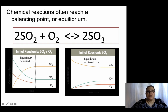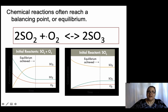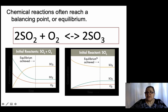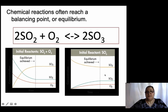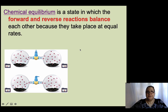Remember when we talked about the rate of reaction — reactants disappear while products appear. In this case it can go either way: you could start with the reactants, so SO₃ disappears and SO₂ and oxygen appear, or vice versa. When you see this type of curve, you know what's going on — chemical equilibrium: the state in which forward and reverse reactions balance each other because they occur at equal rates.